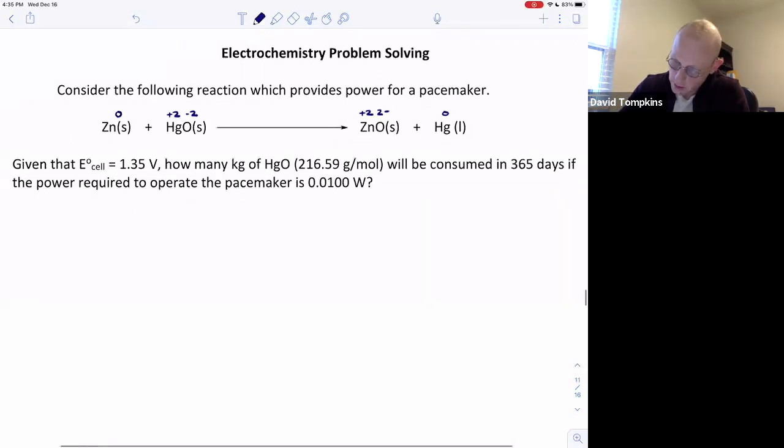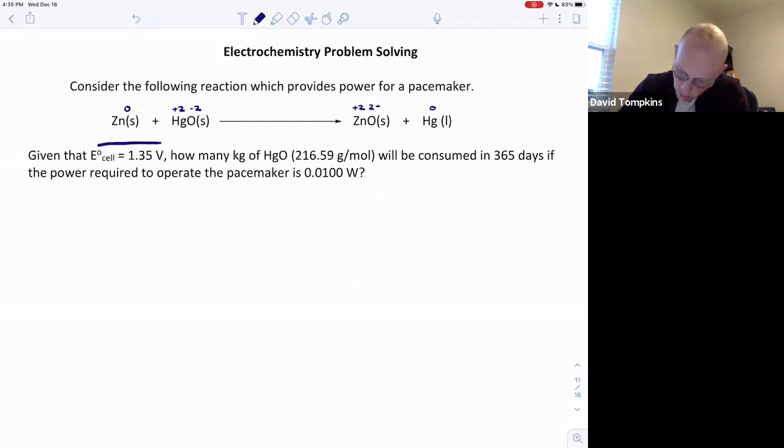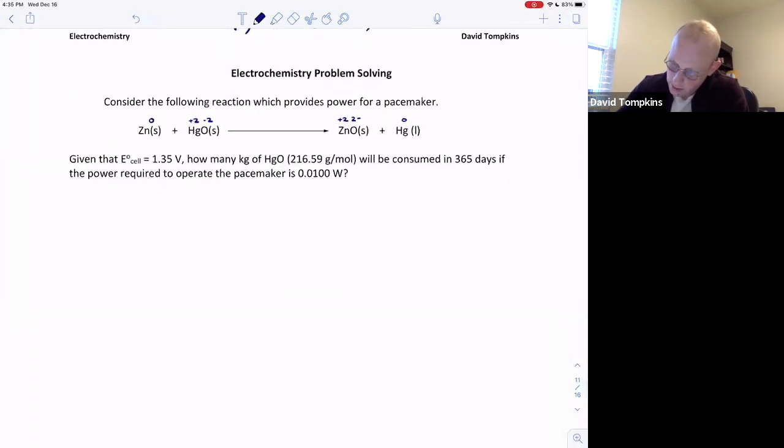This reaction is spontaneous as written with E cell of 1.35 volts. We're asked to determine the amount in kilograms of mercury oxide that would be consumed if we have to operate the pacemaker for one year, 365 days, using 0.01 watts as power.